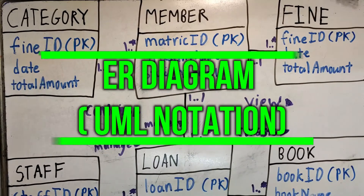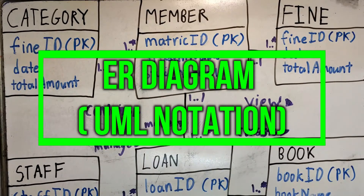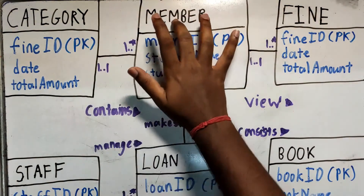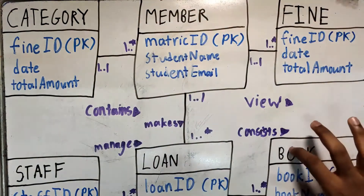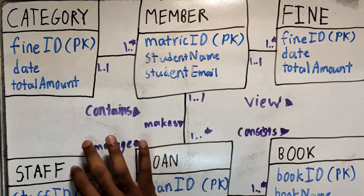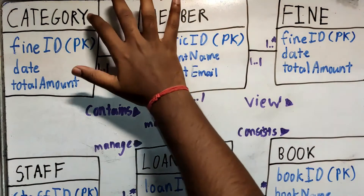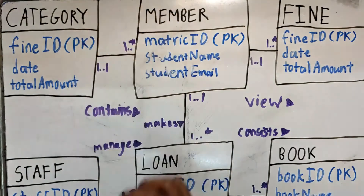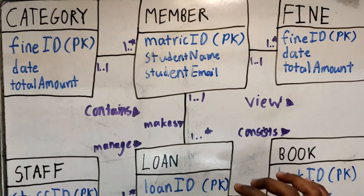We are going to talk about the ER diagram designed using UML notation. We have identified six entities: category, member, fine, book, loan, and staff, based on the GAMILAC system. Each entity has its own set of attributes and also a unique primary key. Each entity has its own set of relationships as you can see here.